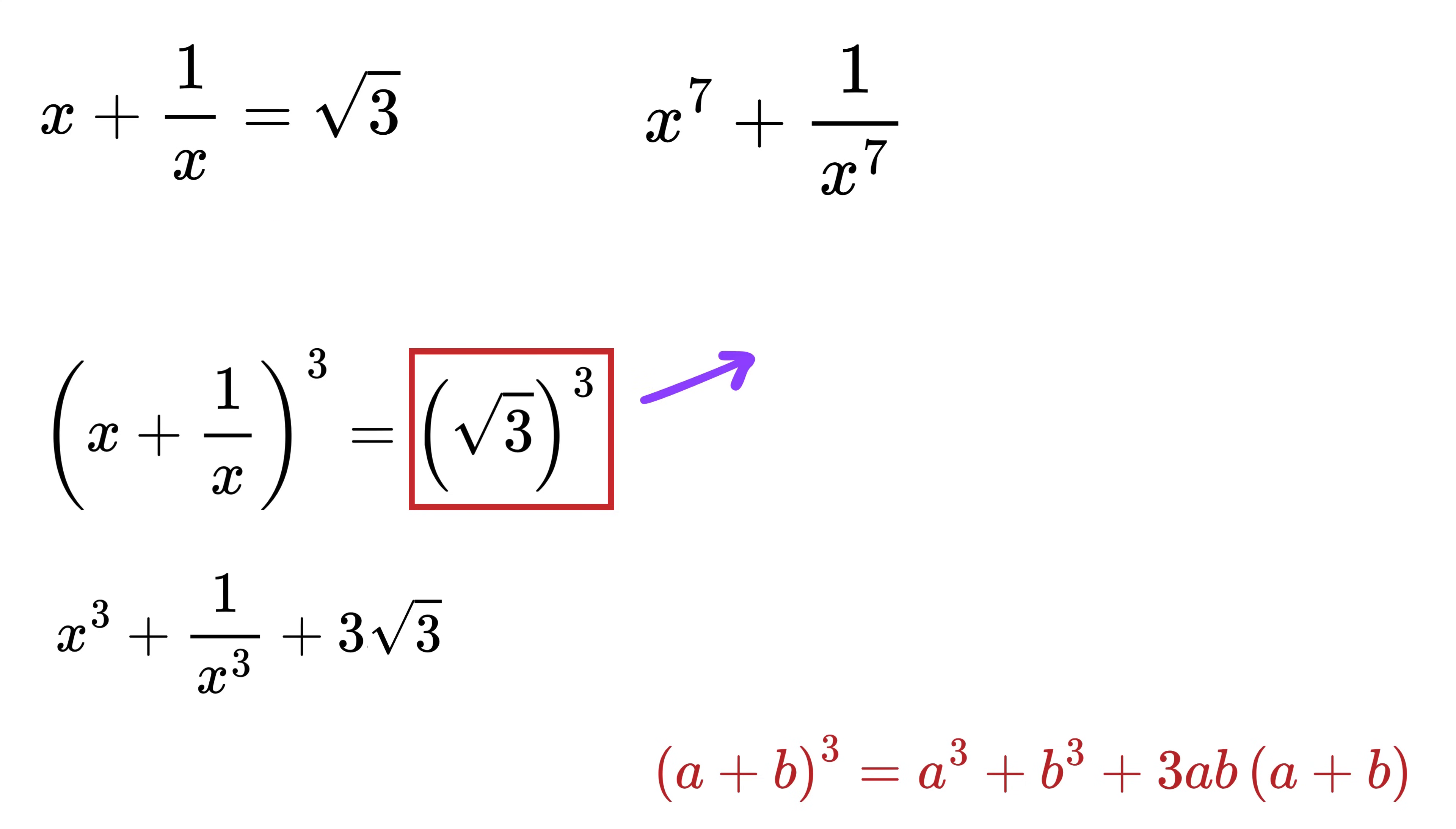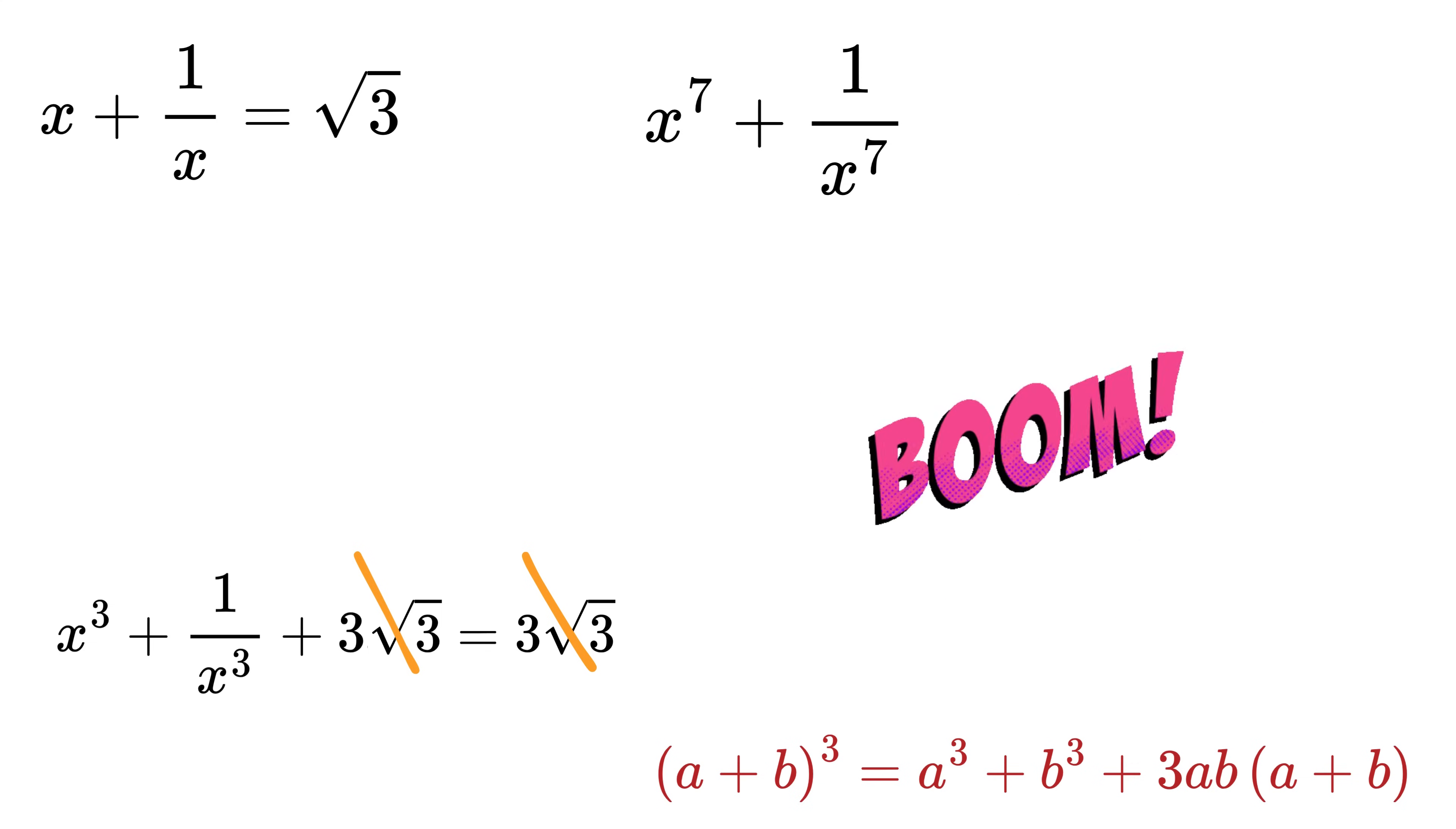So plug it here. The cube of √3 is √3 written three times like this. Now √3 × √3 will be 3, and thus the cube of √3 will be 3√3. Now subtract 3√3 from both sides and boom - we get x³ + 1/x³ = 0.